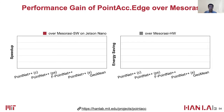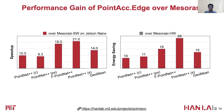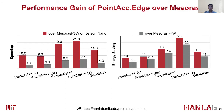Here we show the speedup and energy savings of edge Point Tech compared to the previous state-of-the-art point cloud accelerator Maserasi. The benchmarks are smaller since Maserasi only supports networks that share weights among different neighbors. Edge Point Tech is 14x faster than Maserasi without additional hardware support, and 4.3x faster than Maserasi with additional hardware support on average.